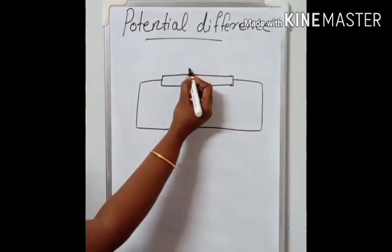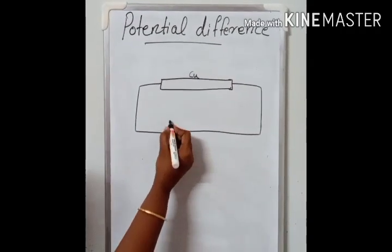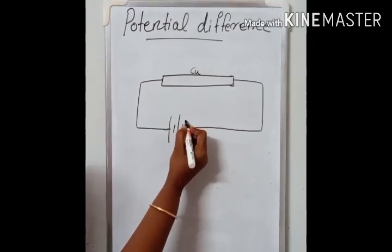Flow of charges is called electric current. So how to produce this potential difference, or how to move these charges? For that, we have to connect this conductor to a battery or a cell. A battery has a positive terminal and a negative terminal. Due to this difference in electric potential, charge flows from one terminal of the conductor to the other terminal. This constitutes electric current. Consider a conductor — for example, a copper wire. And to create a potential difference, we have to connect it to a battery or a cell.